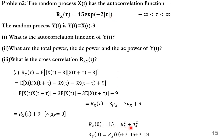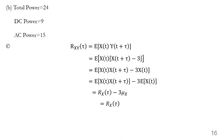R_y(0) = R_x(0) + 9 = 16 + 9 = 25. Total power = R_y(0) = 25. DC power = μ_y² = (−3)² = 9. AC power = σ_y² = total power − DC power = 25 − 9 = 16.